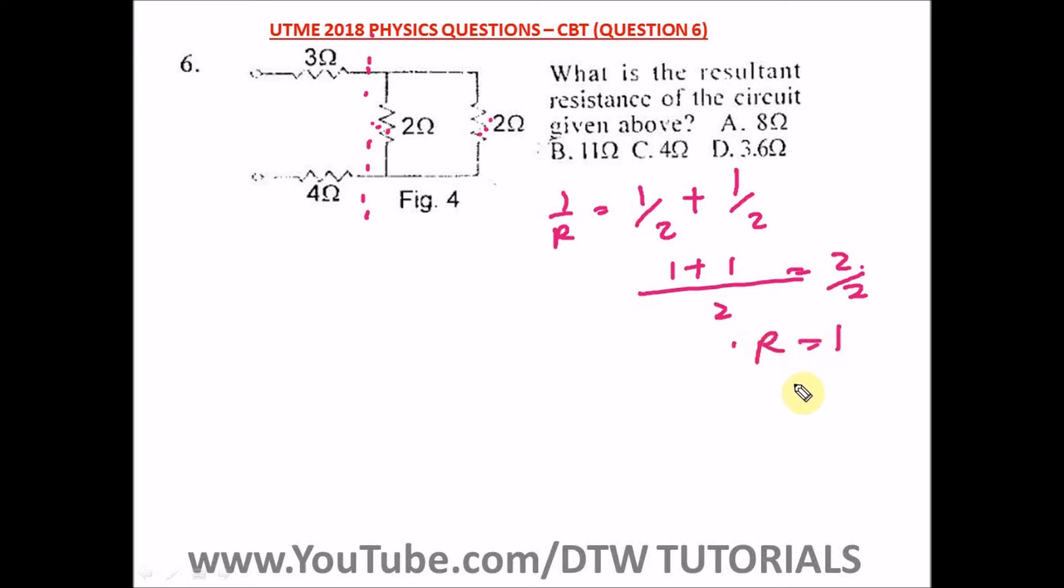From here we are now left with this circuit where this is 3, this is 4, and this is 1. We can easily resolve this now. This is a series circuit, so all we need to do is say 3 + 1 + 4. What is 3 + 1? That's 4, and 4 + 4 equals 8. So we have 8 ohms. This is our answer and our right option here is option A.